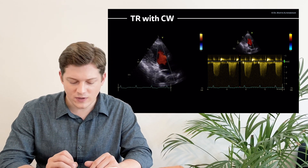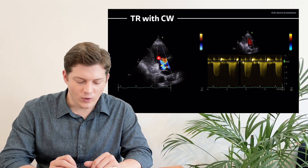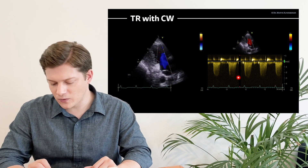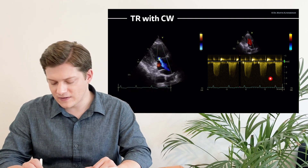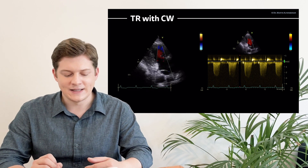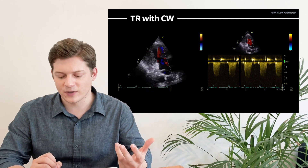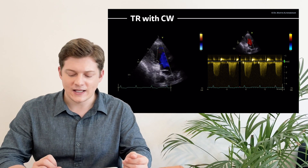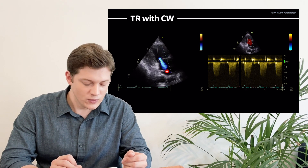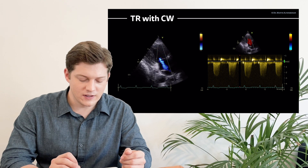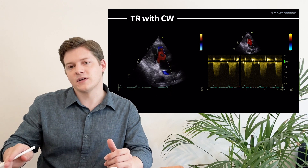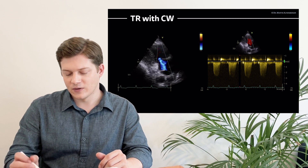You can grade the tricuspid regurgitation here — in this case it's probably moderate. With continuous wave Doppler placed, you can see that the signal is around three meters per second, indicating elevated systolic pulmonary arterial pressures. It can be measured quite well here because the TR is perfectly aligned with the angle of the continuous wave Doppler.